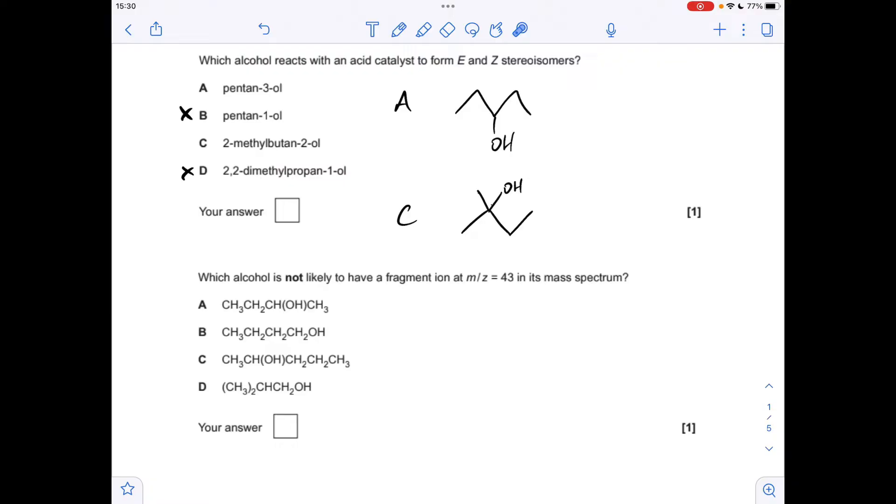Starting with pentan-3-ol, we take the OH group obviously, and we can take an H off here or an H off here. That's going to lead to the same alkene, getting pent-2-ene obviously and water. This can show EZ stereoisomerism because on this carbon of the double bond you've got an H and CH3 so they're different, and on this carbon you've got an H and a C2H5 group so they're different as well.